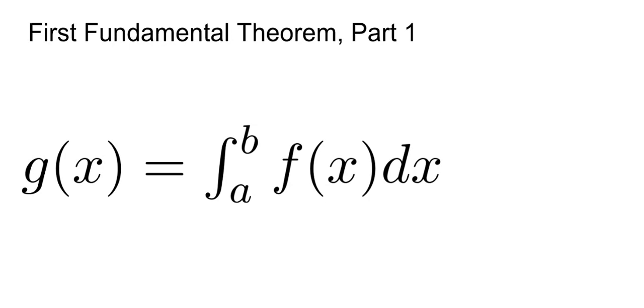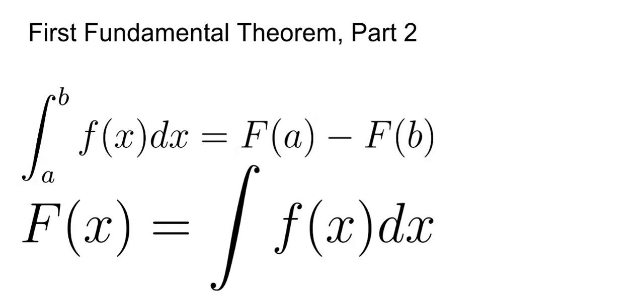From FTC1 part 1, we can get FTC1 part 2, which is as follows. The integral from a to b of f(x) dx is equal to capital F(a) minus capital F(b), where capital F(x) is equal to the antiderivative of f(x) dx.